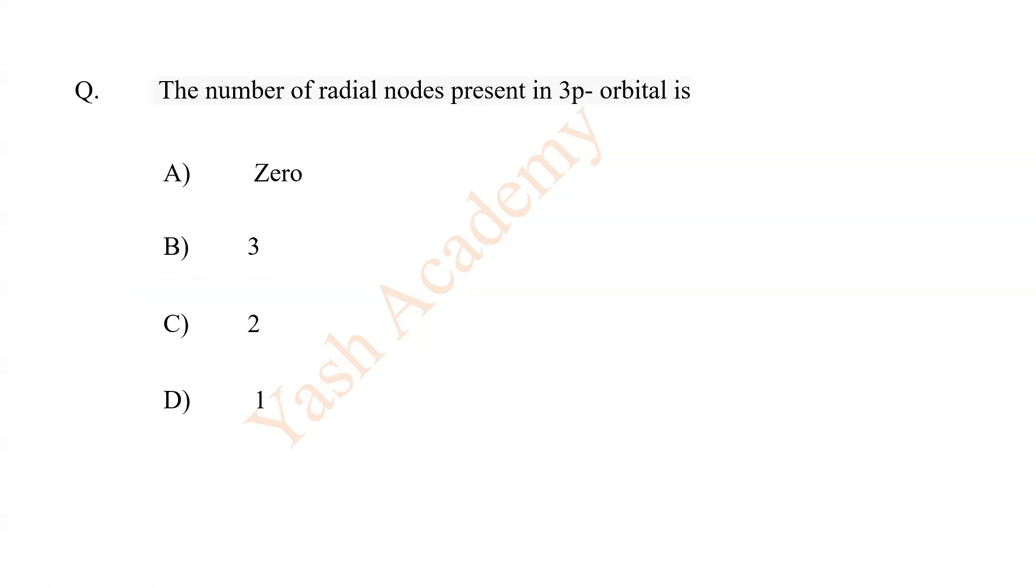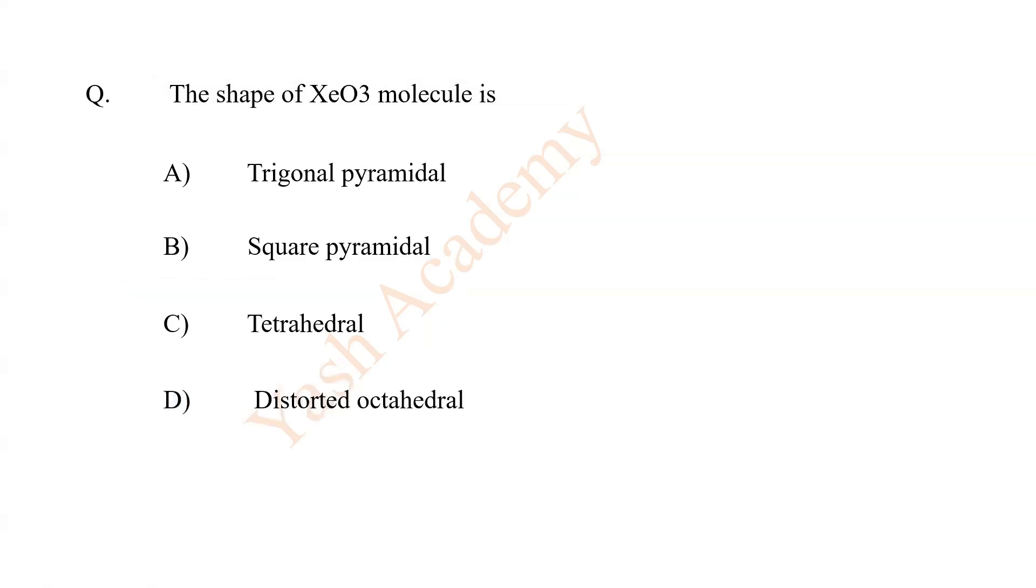The number of radial nodes present in 3P orbital is D. 1. The shape of xenon trioxide molecule is A. Trigonal pyramidal.